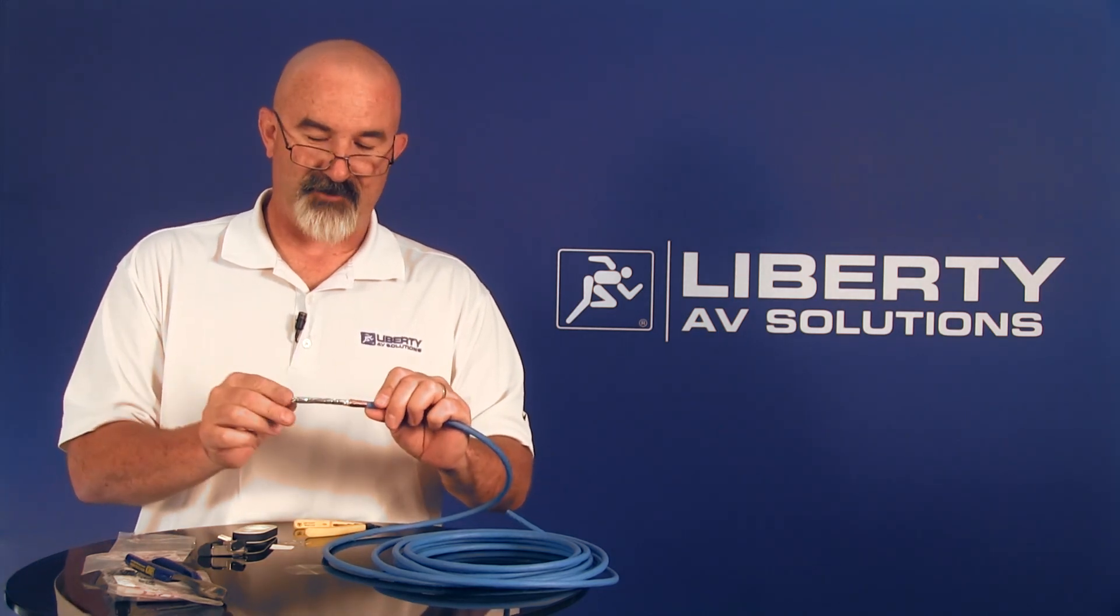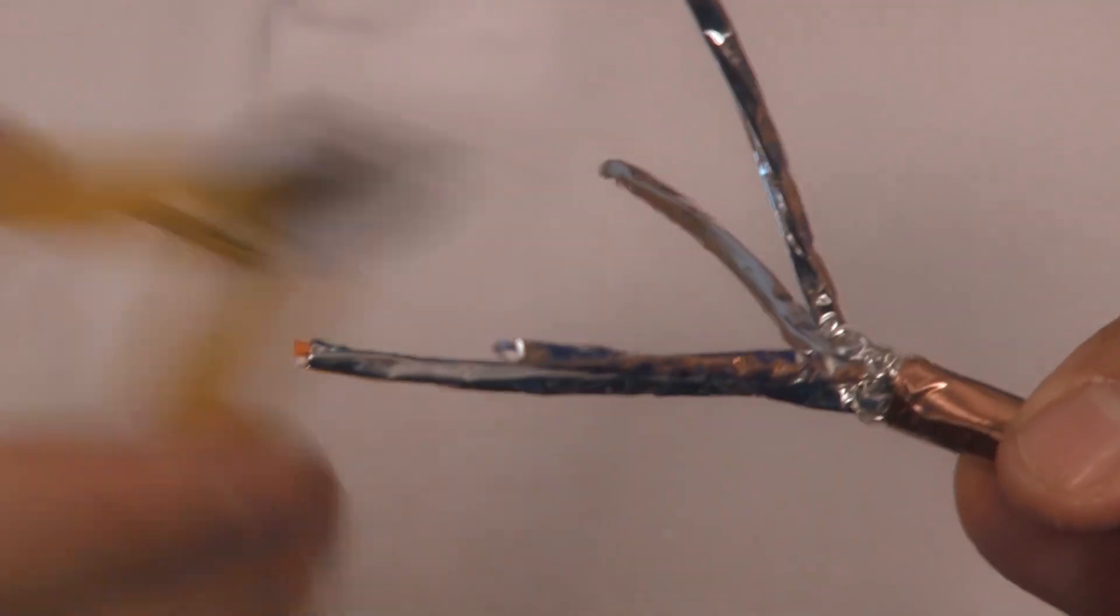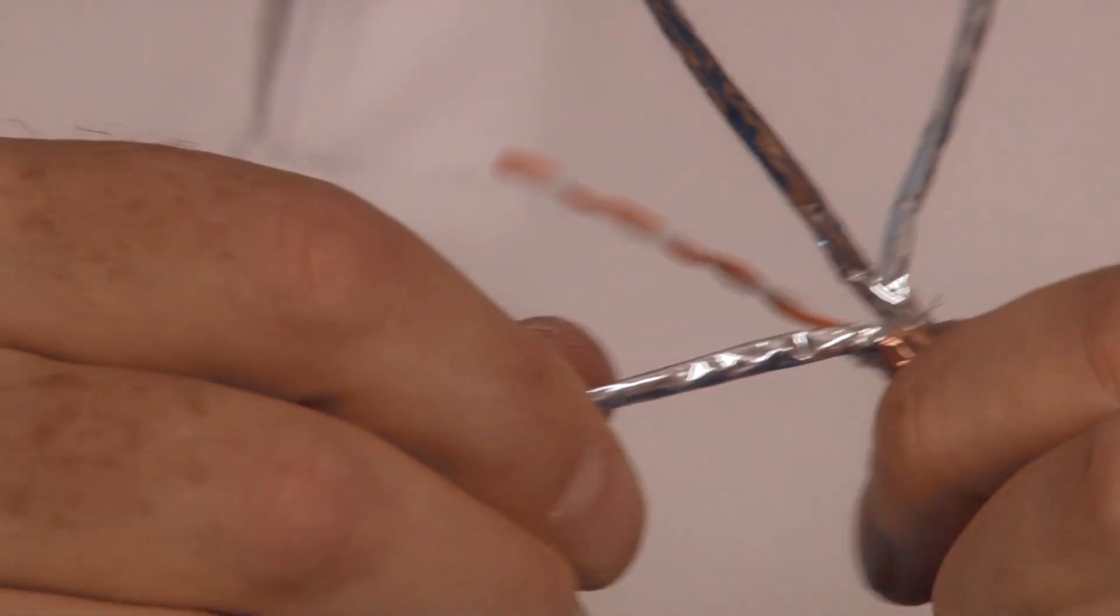Next step is going to be to strip the foil off each of the individual pairs. So I'll separate these out. Each foil has a seam on it and what I want to do is find the seam, follow it all the way down to the edge of the jacket and give it a little nip. Then I can just twist the foil shield right off. I do not want to untwist the wires at this point.